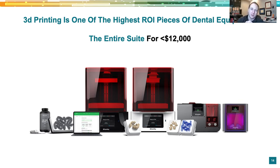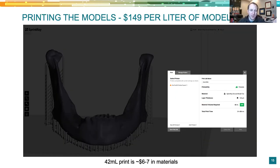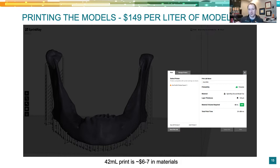For printing one of these anatomical models, it takes about two and a half hours with model resin at 100-micron layer thickness. It's about a 42 mL print — roughly $6 or $7 in material at about $150 per liter. Surgical guides are usually only about 4 mL because they're really small. So this is more resin, but still under $10 in materials. Print it overnight or during lunch — it's not expensive at all.